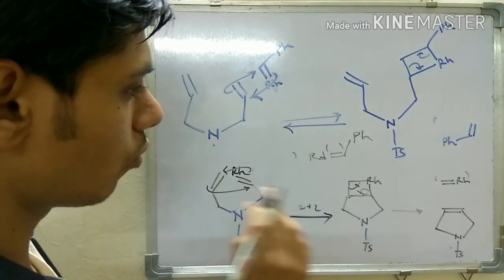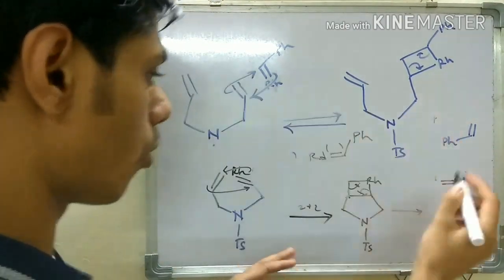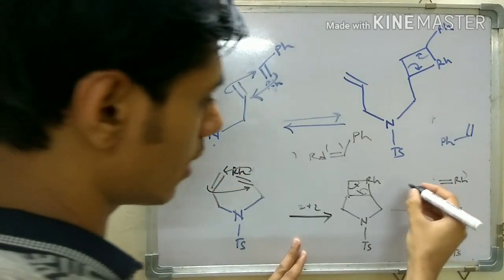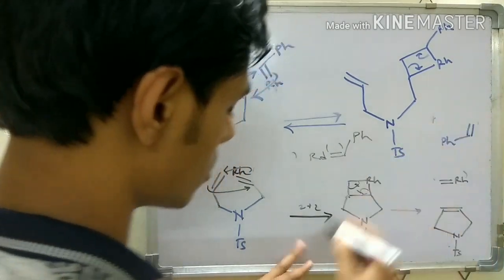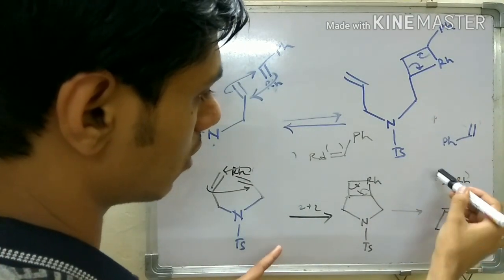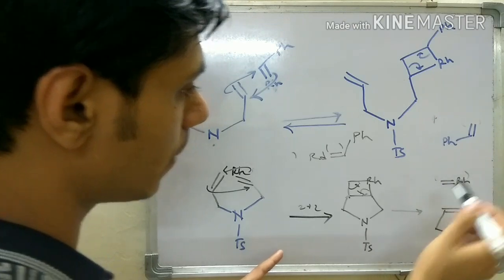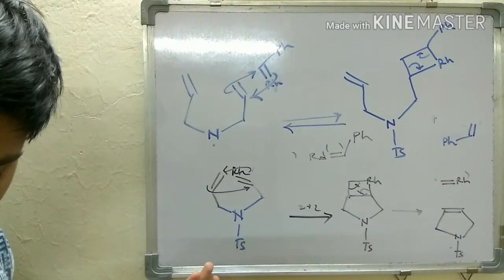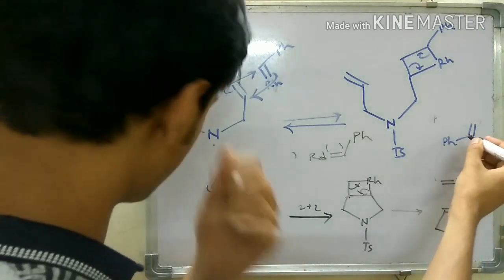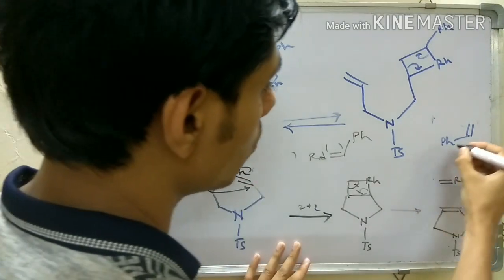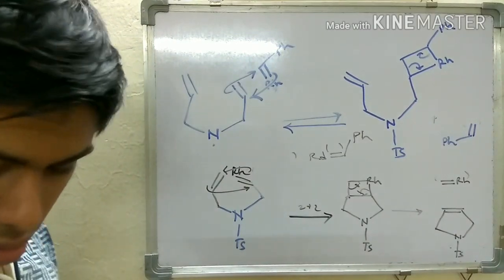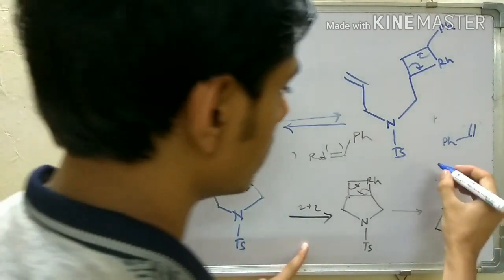When this regenerated catalyst acts in the next reaction, instead of getting styrene, you will get ethylene — because now it is a simple carbene rather than the phenylcarbene from the original Grubbs' catalyst. So from the next step onwards, ethylene is released.